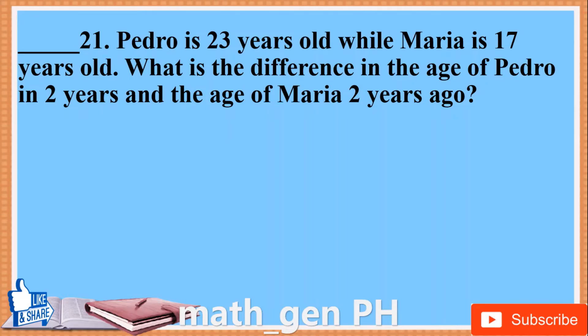Number 21. Pedro is 23 years old while Maria is 17 years old. What is the difference in the age of Pedro in 2 years and the age of Maria 2 years ago?